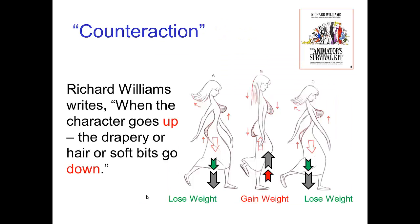Richard Williams in the Animator's Survival Kit describes this — he calls it counter-action. He writes: 'When the character goes up, the drapery or hair or soft bits go down.' In the illustration from his book, the character is coming down and speeding up — going with gravity and losing weight. In the next pose, she's moving upward and speeding up, so it's as if she gains weight, and everything on her body — her hair, clothing, her body itself — seems to be heavier.